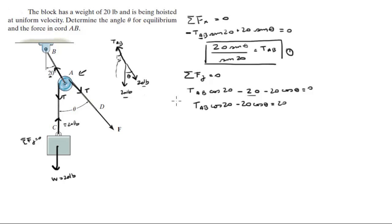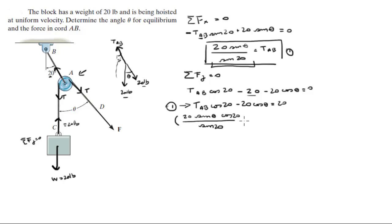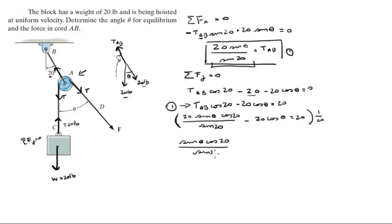Now I'll plug in the value from Equation 1 for tension AB to get: 20 sine of theta times cosine of 20 over sine of 20, minus 20 cosine of theta, equals 20. Dividing the whole equation by 20 gives: sine of theta times cosine of 20 over sine of 20 minus cosine of theta equals 1.